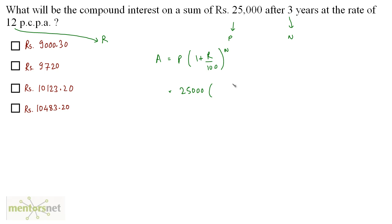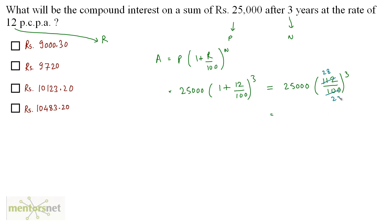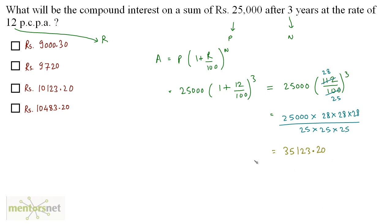Amount = 25,000 × (1 + 12/100)^3 = 25,000 × (112/100)^3. Dividing 112 by 4 gives 28, and 100 by 4 gives 25. So this becomes 25,000 × (28/25)^3, which equals Rs. 35,123.20.